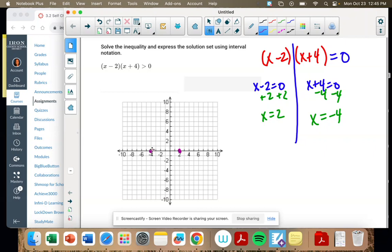So 2, negative 4, and because it's positive x squared, the graph opens up. It's a parabola. Oops.